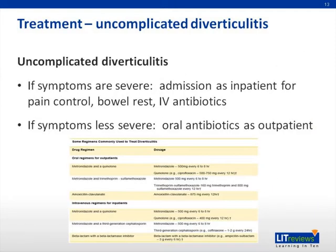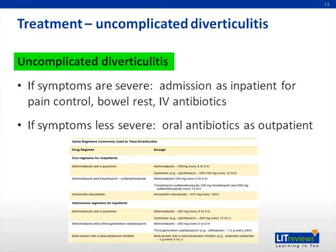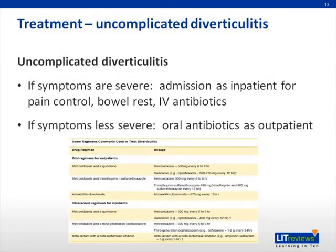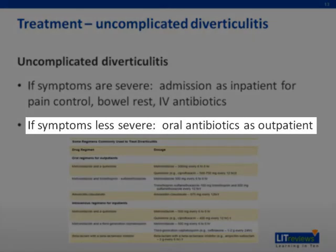Let's move on to the treatment of acute diverticulitis. This differs by the severity of the episode. For uncomplicated diverticulitis — that is, an episode without associated abscess, perforation, fistula, or obstruction — the mainstay of therapy is antibiotics. Patients with severe symptoms of pain typically require inpatient hospitalization, bowel rest, and IV antibiotics. Those patients with less severe symptoms can be treated on an outpatient basis with oral antibiotics.